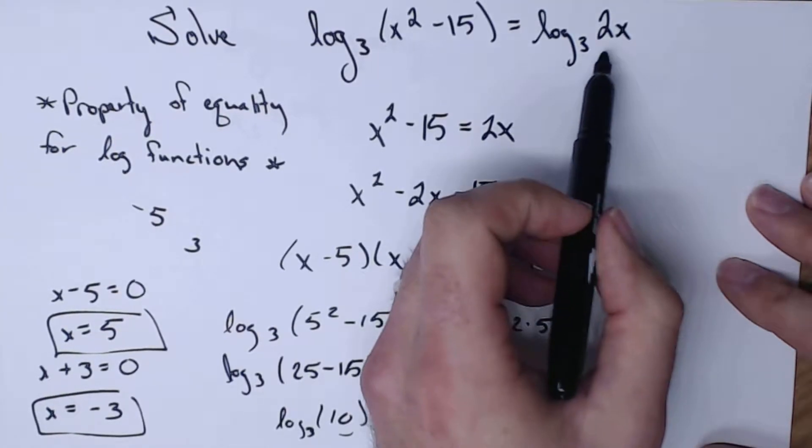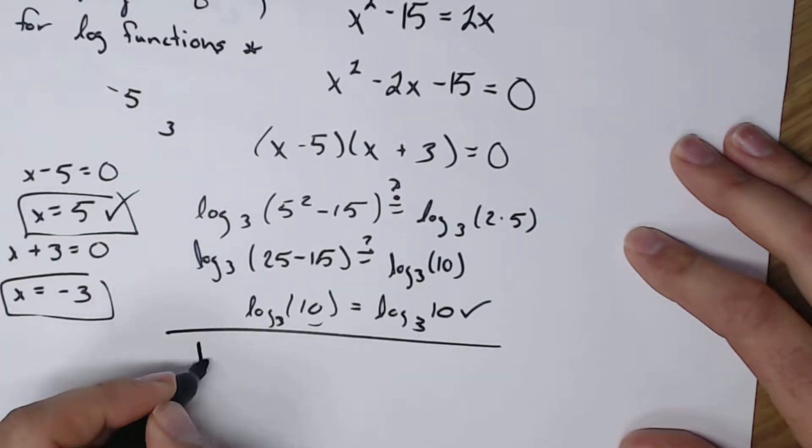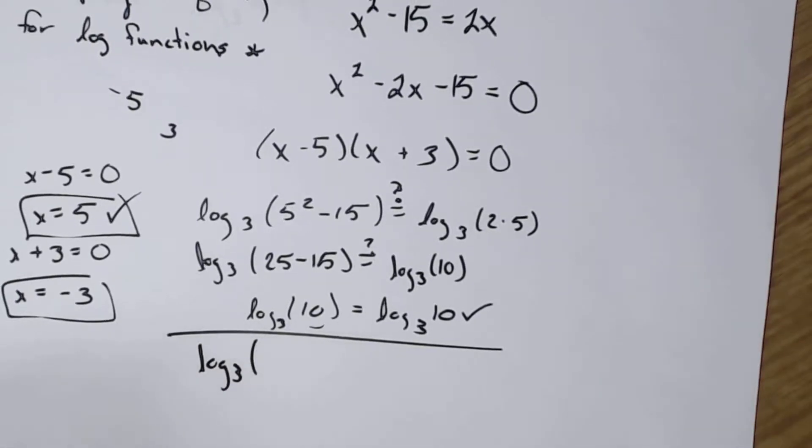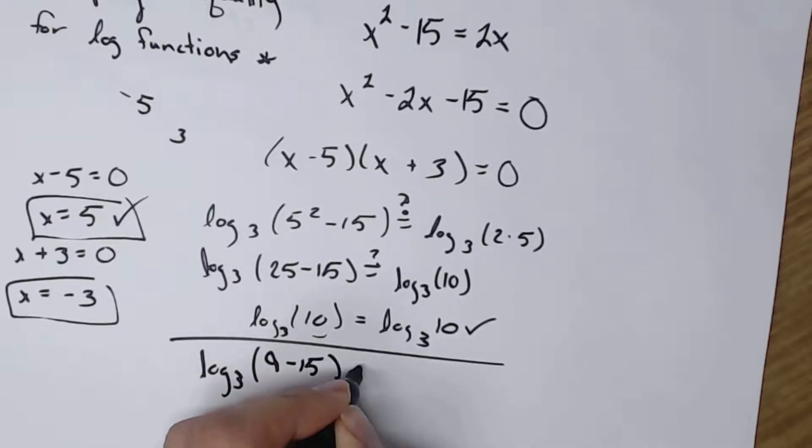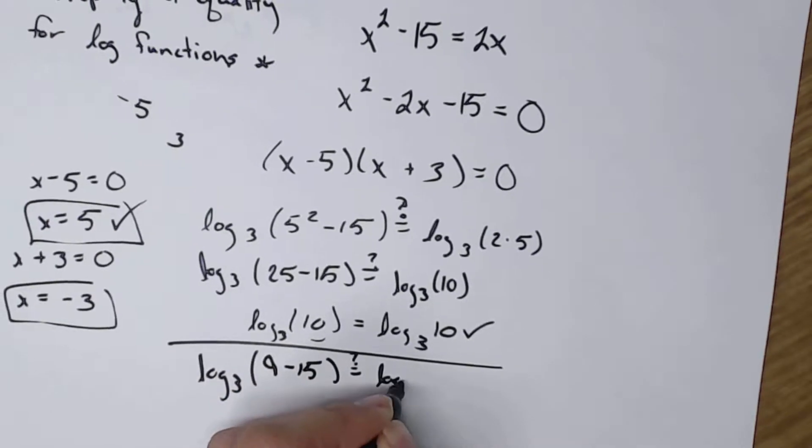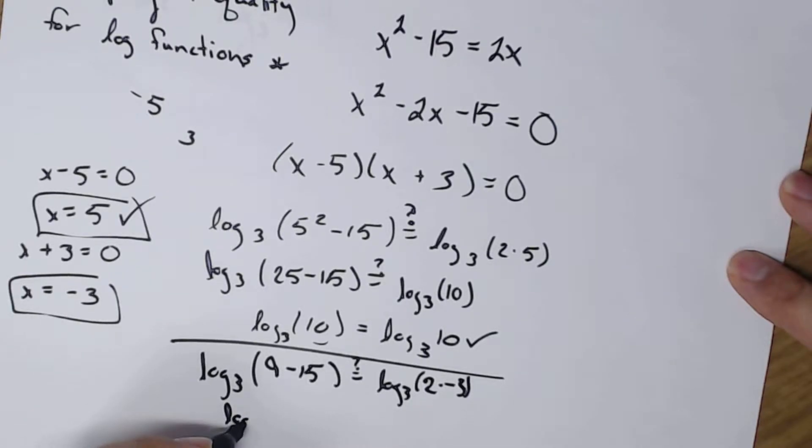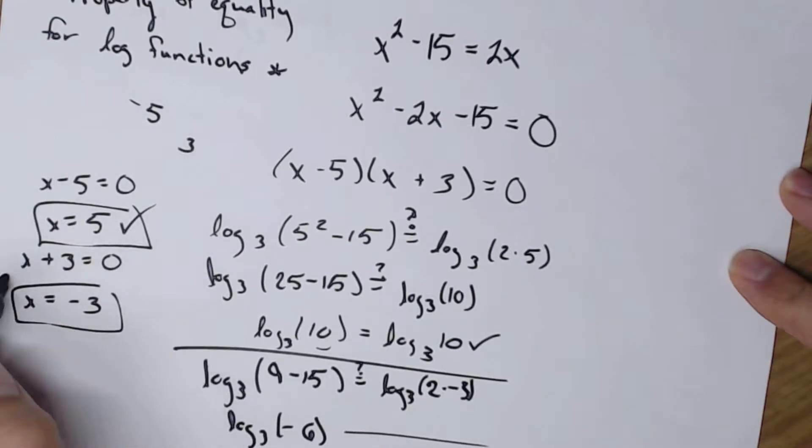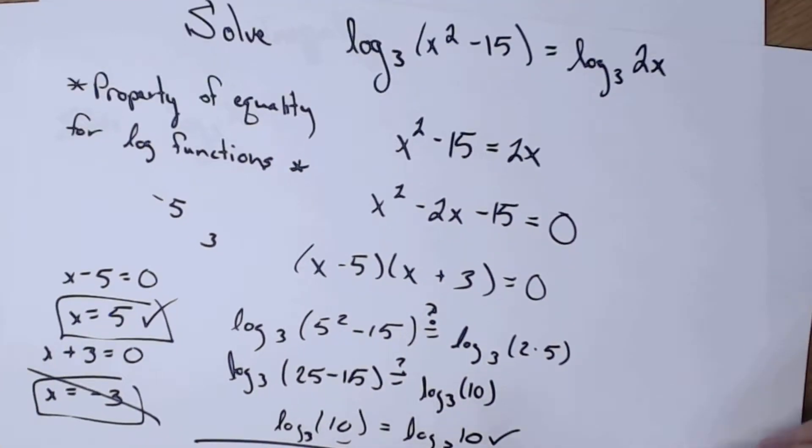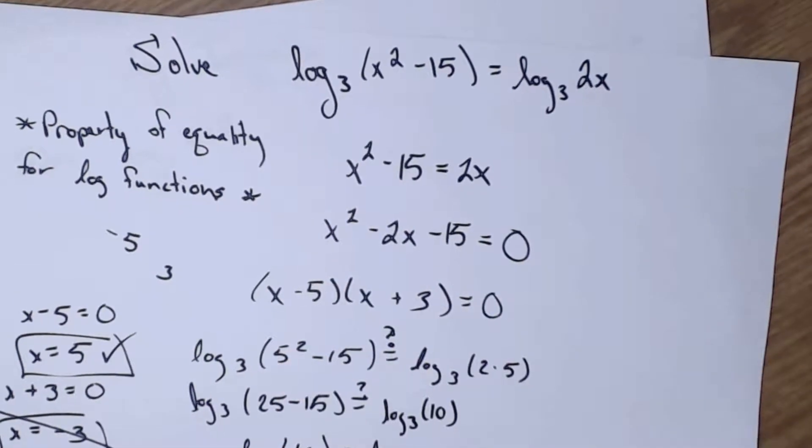Okay, let's try it with the negative 3 there. Let's try that. So the 5 we know works. Log base 3 of negative 3 squared, which is going to be a 9, minus 15. Does that equal log base 3 of 2 times negative 3? Well, that's going to be log base 3 of negative 6. And I'm not even going to finish because I can't have a negative going into a log. So it's just the positive 5 that works. Negative 3 does not. But again, I took the logs and I got rid of them because they were both the same. And then I solved like I would have with a quadratic.